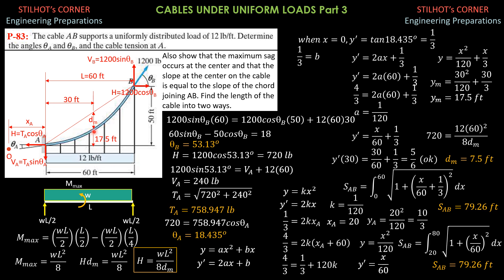To show that the maximum sag D_M occurs at the center: by the general cable theorem, consider a beam loaded with the same loading of W pounds per foot. The maximum moment occurs at the center or midspan. By symmetry, reactions are WL/2 each. Summing moments at the center: M_max equals WL/2 times L/2 minus WL/2 times L/4, giving M_max equals WL²/8. The maximum moment in a simply supported beam under uniform load is WL²/8.